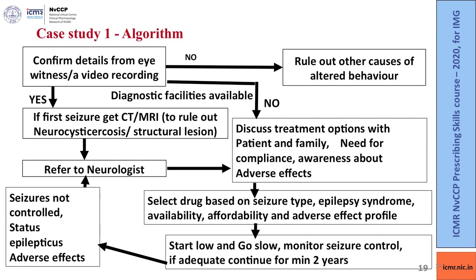When evaluating this patient in the OPD, confirm details from eyewitness or video recording. If this is a first episode and CT or MRI is available, get it done to rule out neurocysticercosis or a structural lesion. If not available, discuss treatment options with patient and family, discuss the need for compliance and awareness of adverse drug reactions, then select a drug based on seizure type, epilepsy syndrome, availability, affordability and adverse drug profile.